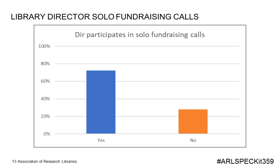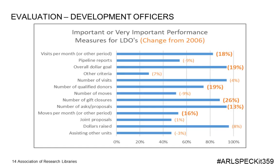We found that over 70% of library directors participate in fundraising calls without the chief library development officer or other fundraising staff members, which is comparable to the 2006 figures. The solo interactions are often the result of a personal relationship with the donor, and are not typically proposal deliveries but relationship building or sustaining in nature. We also investigated the evaluation measures used for those involved in development. For library development officers, the most common metrics were dollars raised, numbers of asks, closures, qualified donors, and visits. The importance of visits, counts for qualified donors, closures, proposals, and moves all saw significant increases from 2006 to current.